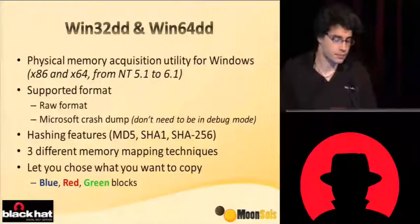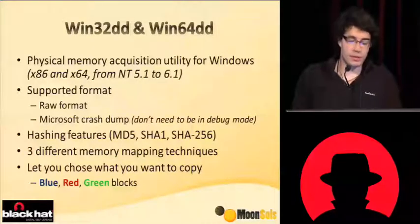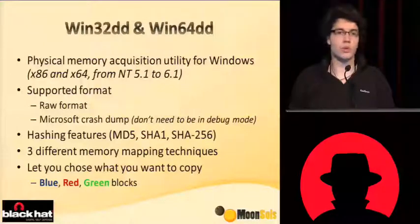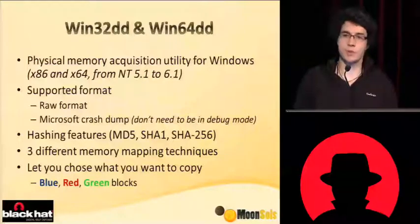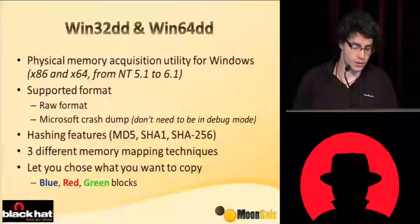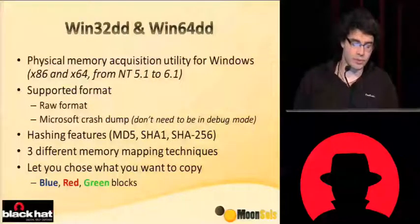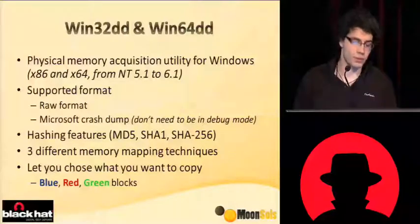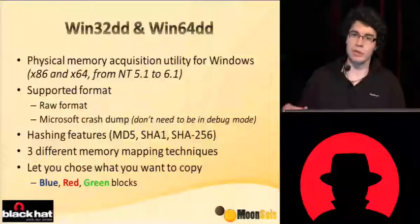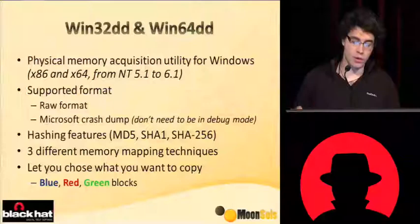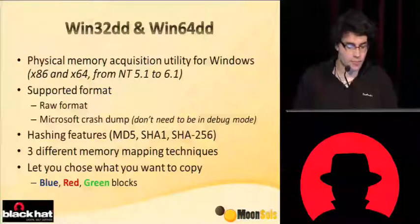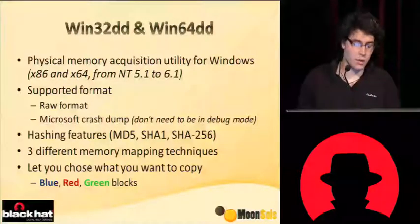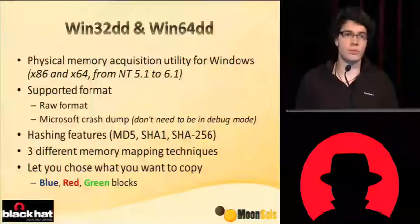Regarding WinDD, this is a physical memory acquisition utility for Windows which you use on a live system. It works from Windows XP to Windows 7 with both 32-bit and 64-bit editions. It supports two output file formats: raw dump and the Microsoft crash dump. You can generate a Microsoft crash dump even without using debug mode, which means you don't have to reboot. It also has hashing features — at the same time you generate your memory dump, you can compute an MD5, SHA-1, or SHA-256 hash. It also has three different mapping techniques.